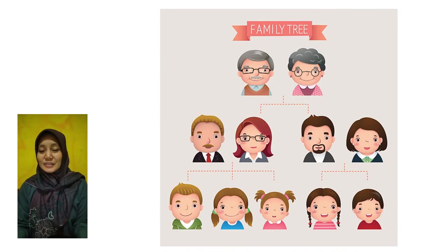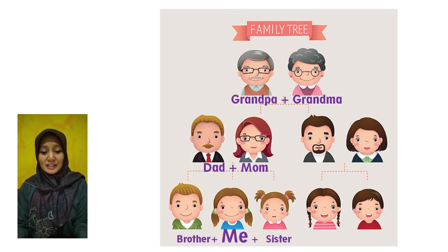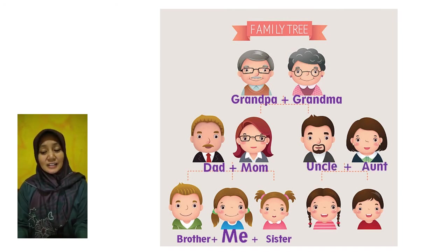Now let's learn about the family tree. We start from grandpa and grandma — they have children. Your mom is married to your dad, and they have children: your brother, you, and your sister. Grandpa and grandma also have a son — he is your uncle. Uncle is married to aunt, and they have children. They are your cousins.